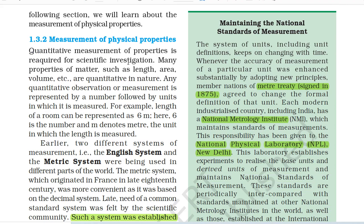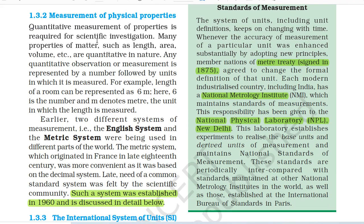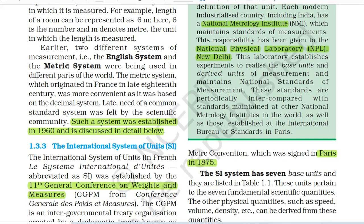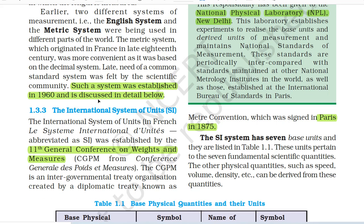1.3.2 Measurement of Physical Properties. Quantitative measurement of properties is required for scientific investigation. Many properties of matter such as length, area, volume, etc. are quantitative in nature. Any quantitative observation or measurement is represented by a number followed by units in which it is measured. For example, length of a room can be represented as 6 meters — here 6 is the number and m denotes the unit meters. Earlier, two different systems of measurement — the English system and the metric system — were being used in different parts of the world. The metric system, which originated in France in late 18th century, was more convenient as it was based on the decimal system.